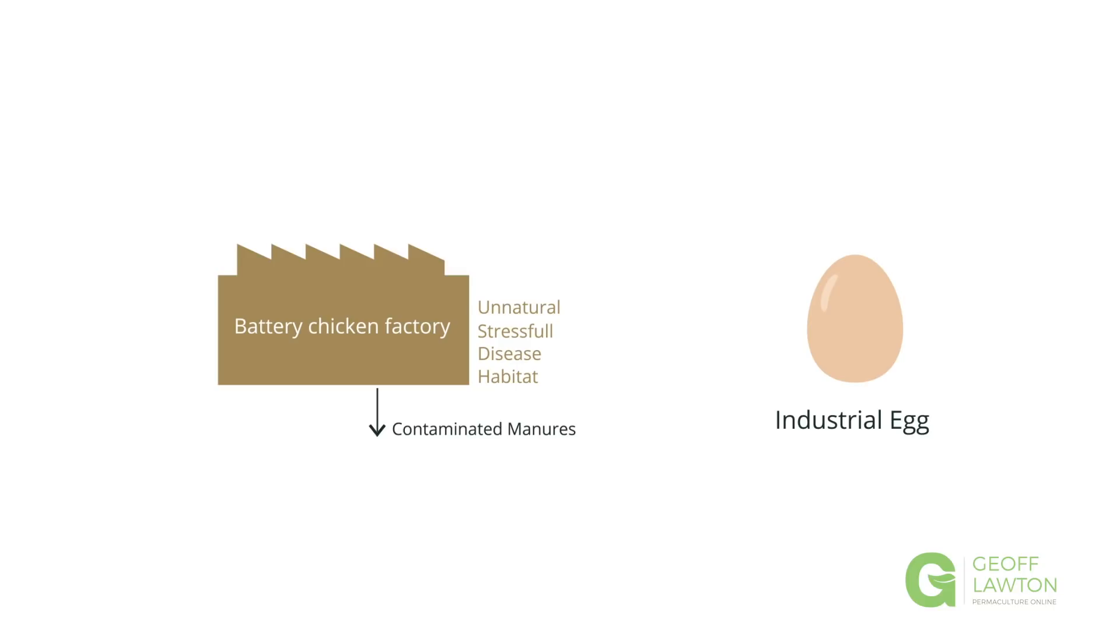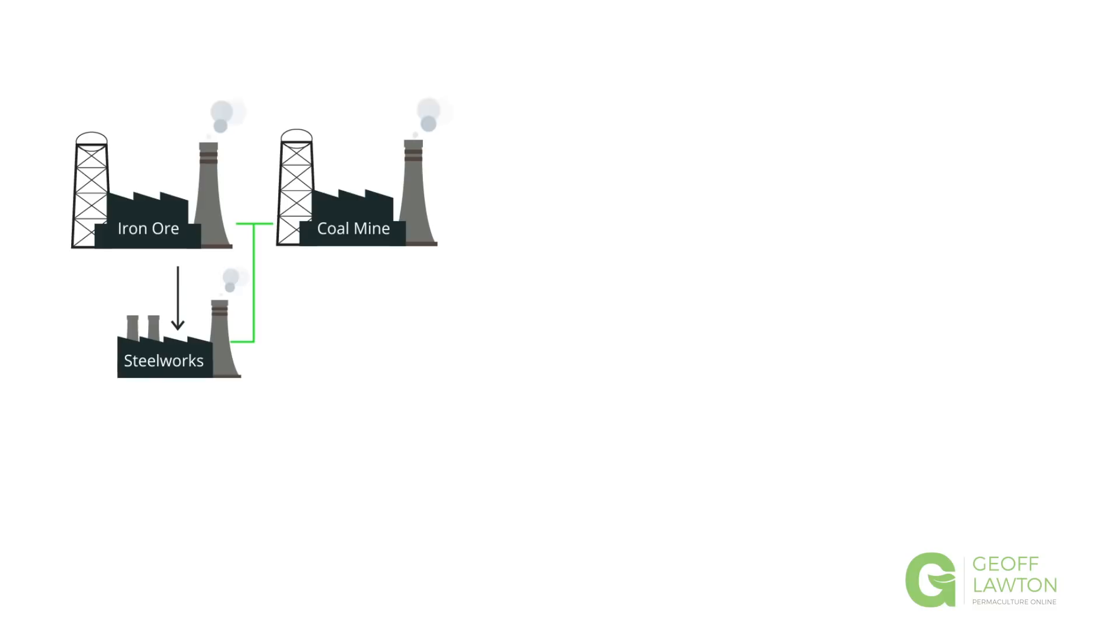What's it take to make all those metal components? Well, to start with, you need an iron ore, somewhere you need to mine iron ore, and then you need a coal mine because then you need a steelworks using the coal and the iron to make steel, and you need a power station to run all of this. And then you need a manufacturing plant to make the components that make the chicken factory.